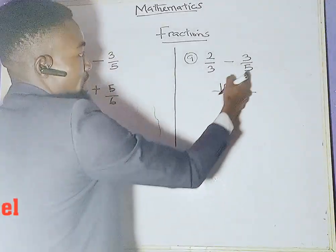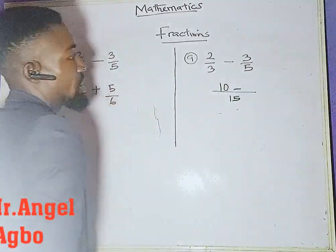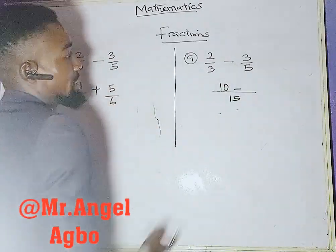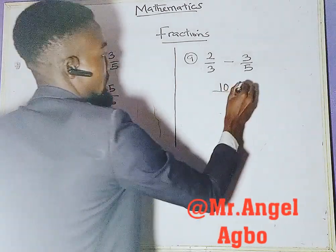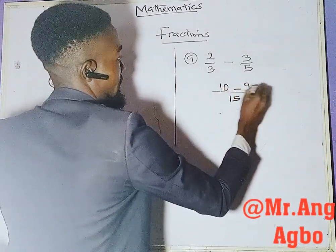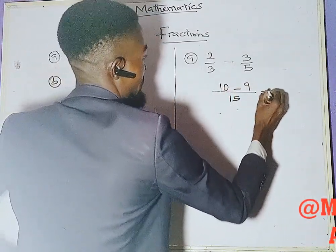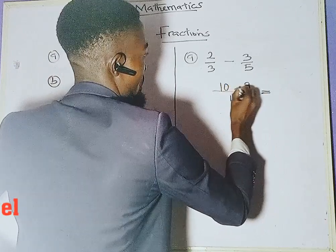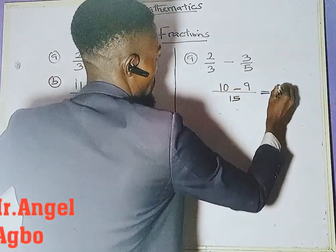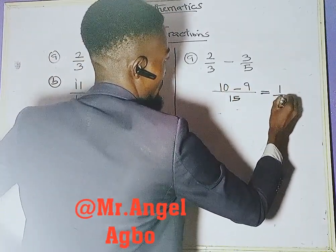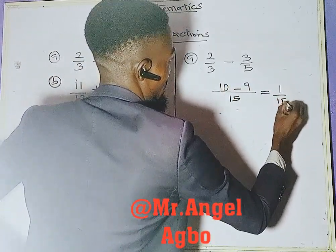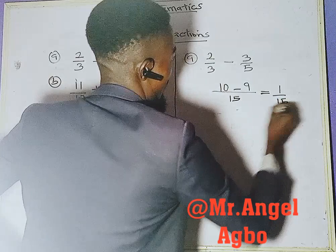Minus: 15 divided by 5 is 3, and 3 times 3 is 9. So we have 10 minus 9, which is 1, divided by 15. As simple as that.